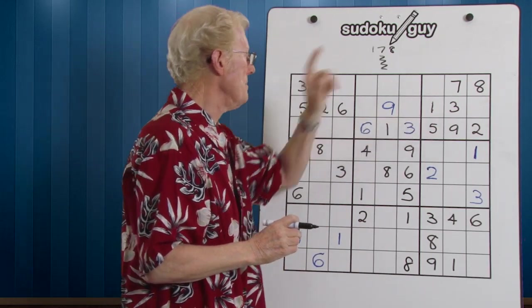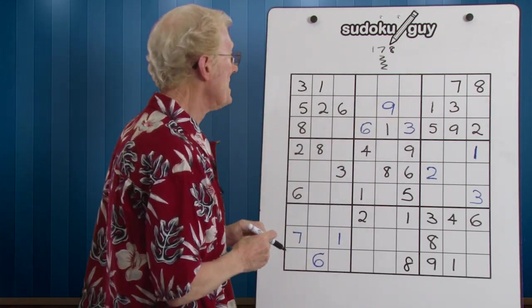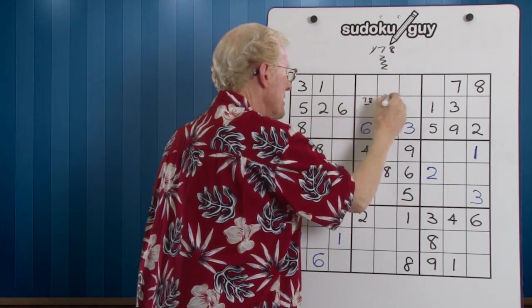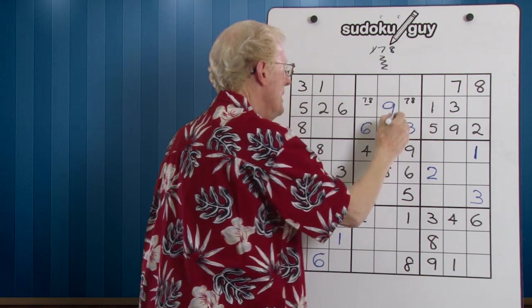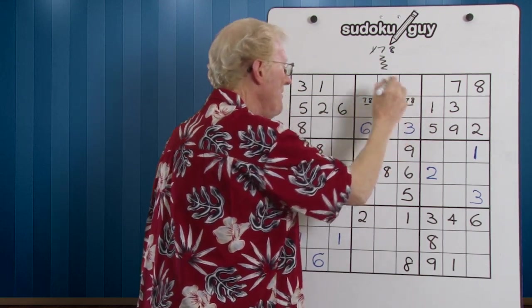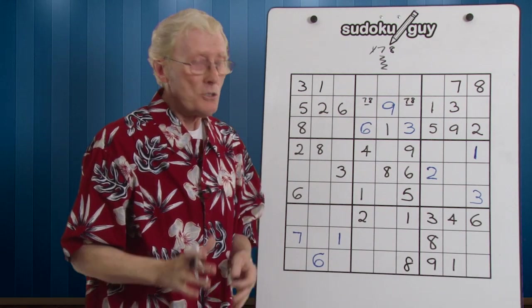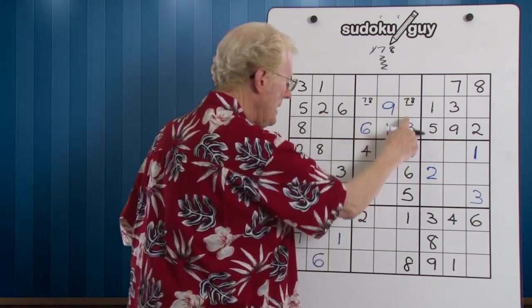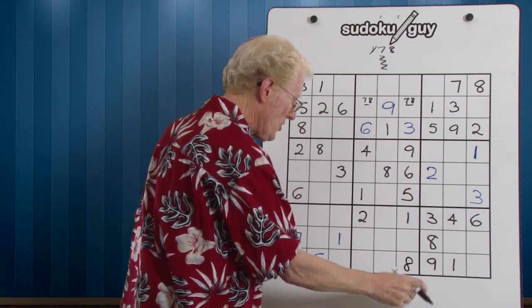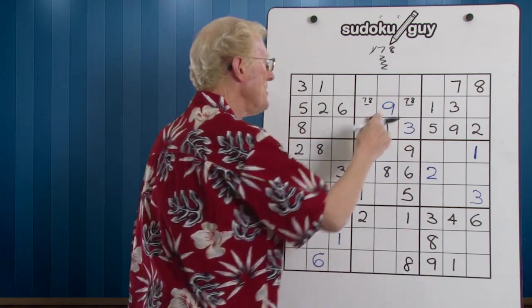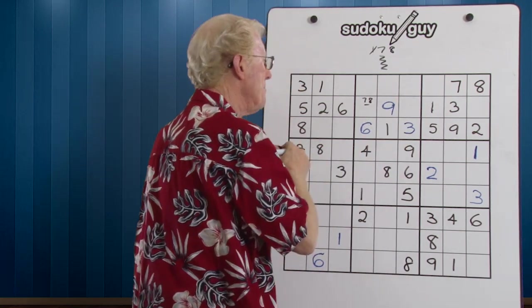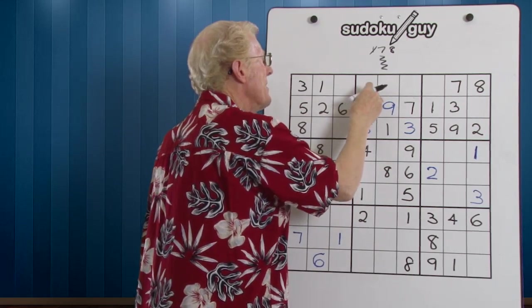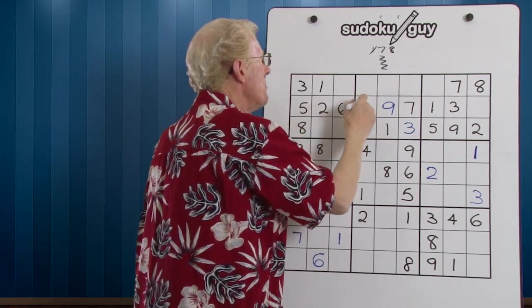Now what's left? We have a seven and eight left, and would you believe it becomes a matching pair. Once you've done that, we then look down the column to see if there's a seven or an eight. And it turns out that when I look down here, there's an eight. So what that does is it cancels out that eight and it becomes a seven. And this therefore becomes your eight. And very quickly, we've got three numbers.